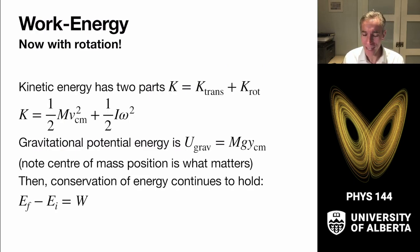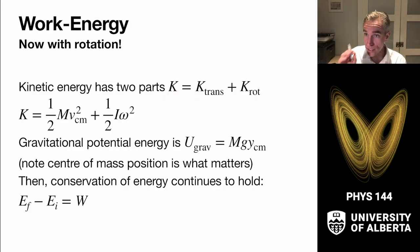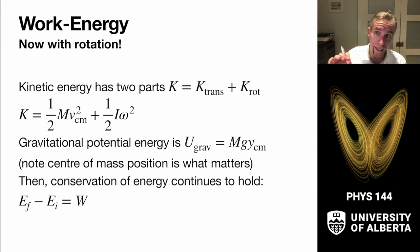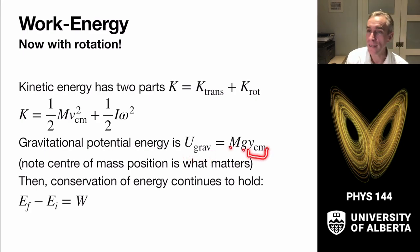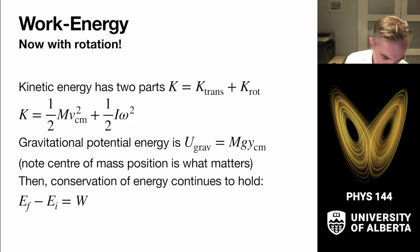Now we can think about energies in systems with two parts. The total kinetic energy is the sum of translational motion and rotational motion: one half m v_cm squared plus one half I omega squared. An important rule is that the gravitational energy is the mass times g times the height of the center of mass. With these basics, we can continue doing conservation of energy problems including the rotational kinetic energy term.